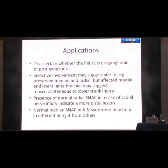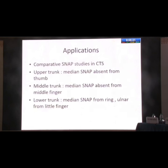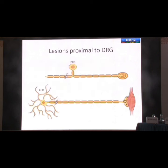Sometimes SNAP helps in localizing a particular nerve injury. For example, in radial neuropathy, if the radial SNAP is preserved, you know the lesion is distal to the origin of the superficial cutaneous radial nerve and just above the posterior interosseous nerve. Similarly, in anterior interosseous syndrome, the median SNAP will be preserved. If median SNAP is absent from the thumb or index finger, upper trunk is involved; absent from the middle finger means middle trunk; absent from ring finger and ulnar from little finger means lower trunk involvement. This is the most classical application: in preganglionic injury SNAP is preserved, which is not the case in motor nerve stimulation.